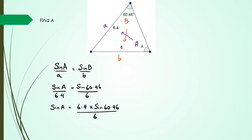Actually, you know what I'm going to do is I'm going to do this in one whole line just to save a bit of time here. So I could write this as A is equal to sine inverse of 6.4 times sine 60.46 divided by 6, and that's what my angle should equal.